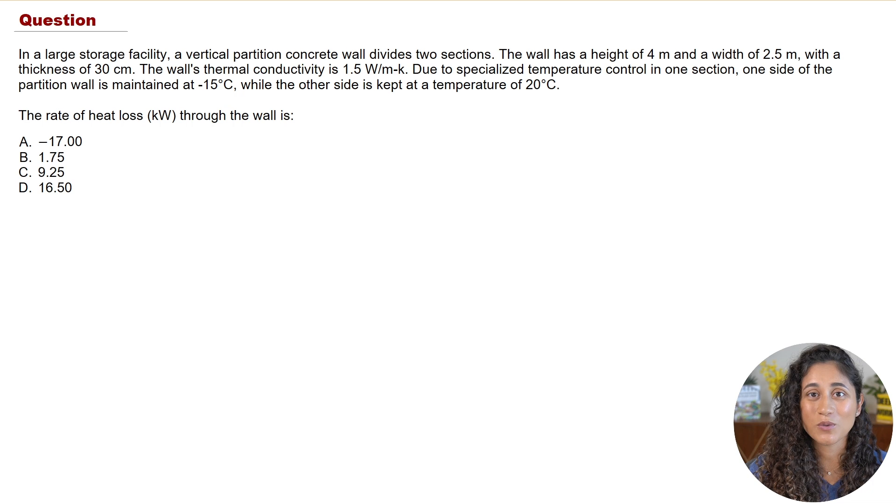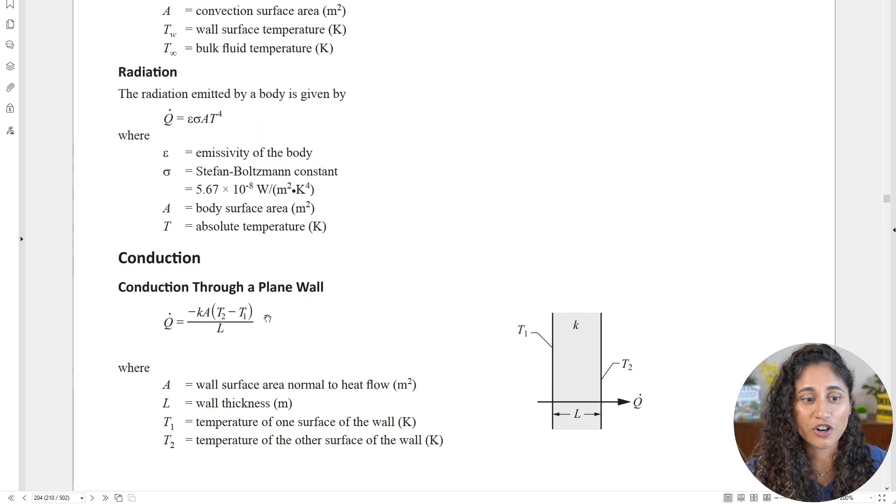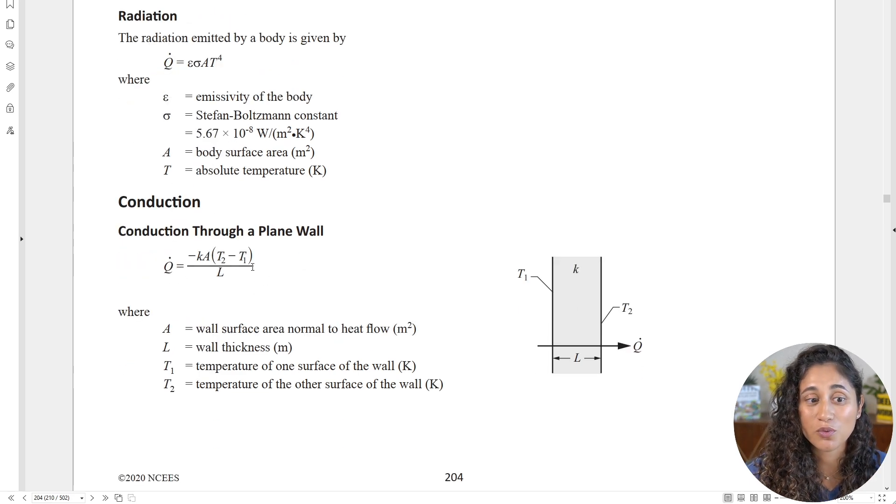So to solve this problem the first thing we got to do is go to the reference manual and take a look at the equation. If we go to the heat transfer section here we are given the equation for conduction through a plane wall. As we discussed earlier we do have heat transfer through conduction and we also have a plane wall, a concrete wall, so this is the equation that we're going to use.